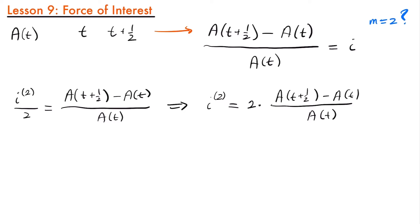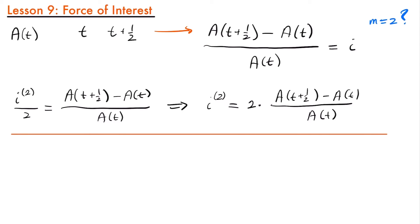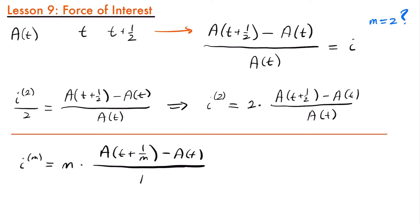But what if we continuously increased the number of times this nominal annual rate is convertible — changing m to 3, then 4, then 5, and so on, increasing it to infinity? Let's generalize by replacing all the 2s with m, giving a general formula for an unspecified number of periods per year: i^(m) equals m times [A(t + 1/m) minus A(t)] divided by A(t). Now we have a generalized form, and we want to find what the nominal annual rate convertible infinitely would be using this equation.